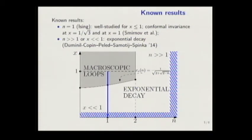And also for x very small, it is shown that there will be exponential decay. And for n very large, it is shown that there is exponential decay for all x's. So, there is no phase transition for those values of n.